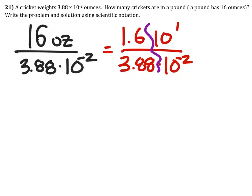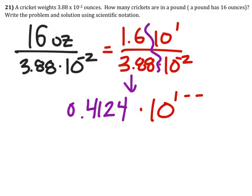Now we will divide these, so 1.6 divided by 3.88, and I get 0.412, all rounded to 4, times 10 to the power of 1 minus the negative 2 using the quotient rule, which means I will have to add these.